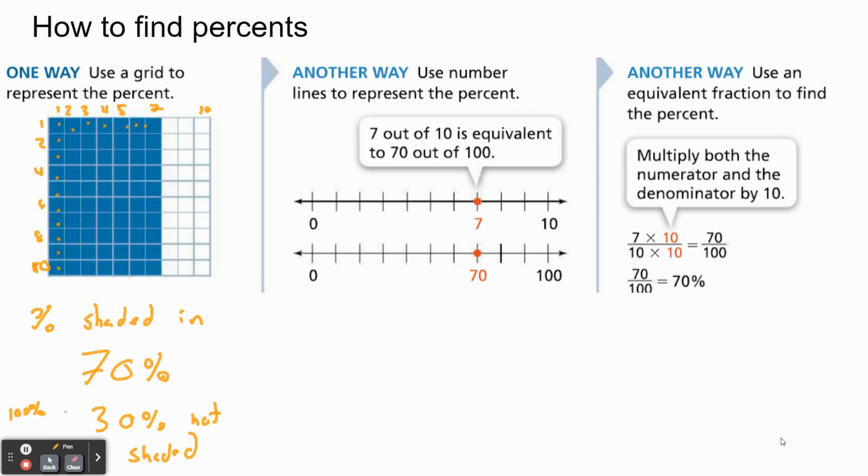The next method is using a number line. So if we look at this number line, we have 0 to 10, and we have 70. We can make an equivalent number line - it's the exact same length, zeros line up. But this time instead of 10, we're going to use 100.